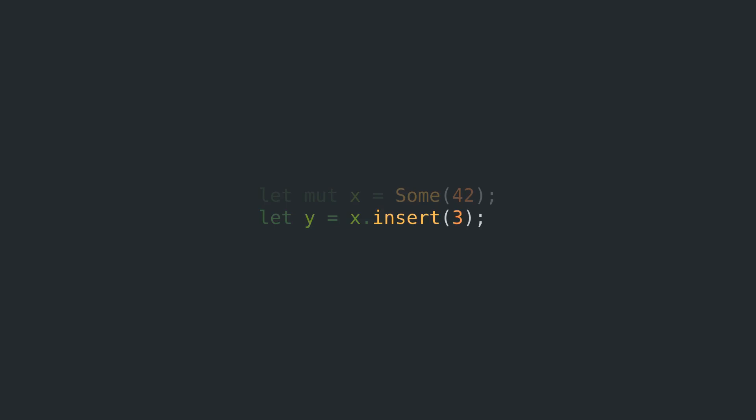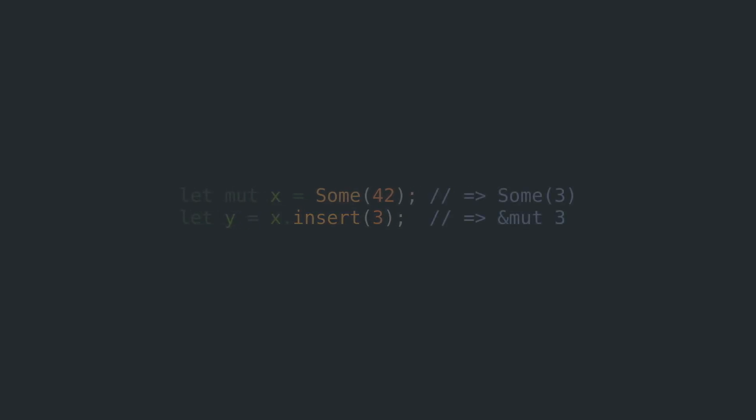You didn't guess that one. The old value is dropped. The return value of the insert operation is a mutable reference to the new contained value. Feels a bit illegal to fidget with the value after handing it to the option, but it's not as if Rust would care about ownership.